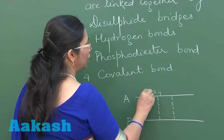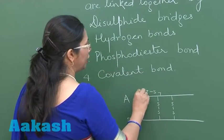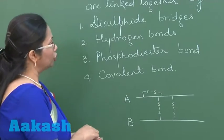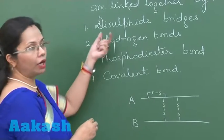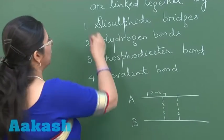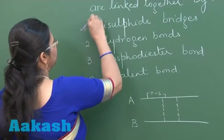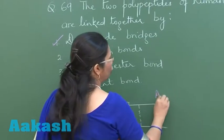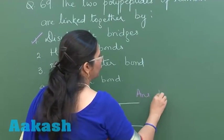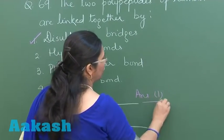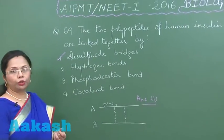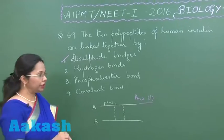So our answer is disulfide bridges, that is option one. And let's move on to question number 70.